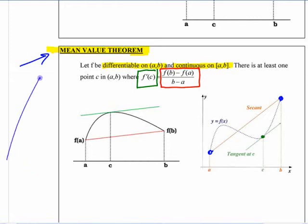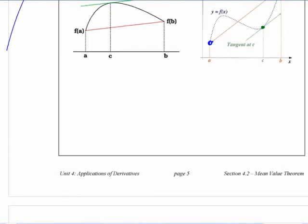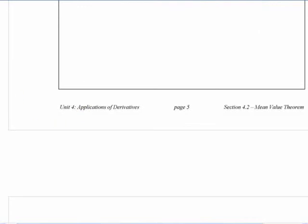Differentiable means it can't have any sharp corners like this because then it doesn't have to be true. If it's not differentiable on that entire thing, draw something so that it's not differentiable the same way. If you make some kind of a function here where it's not differentiable the whole way...